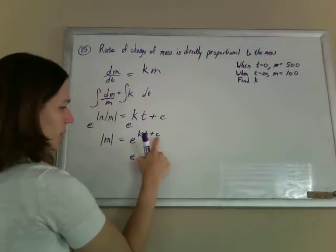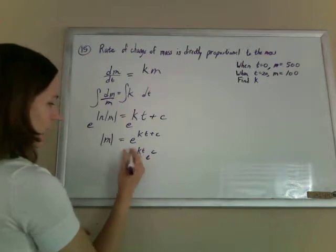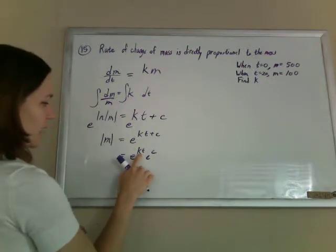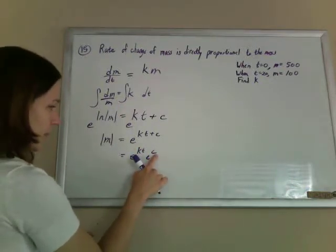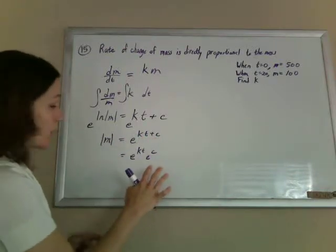Well, you can make this look a little bit more familiar. e to the kt plus c, if you're adding exponents, you could go backwards and say that would be the same thing as e to the kt times e to the c, because if you are multiplying things with powers, you would have been adding their exponents.